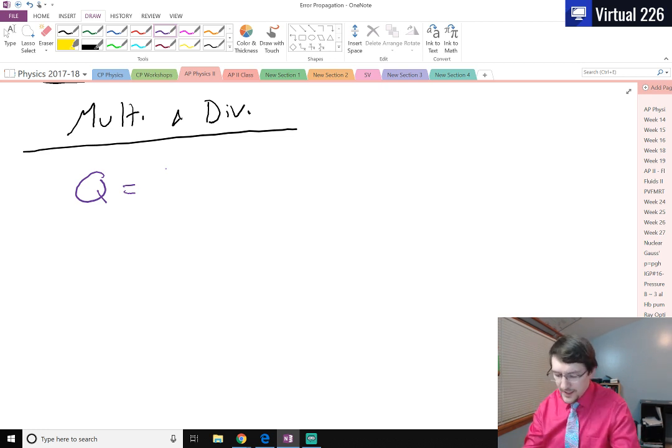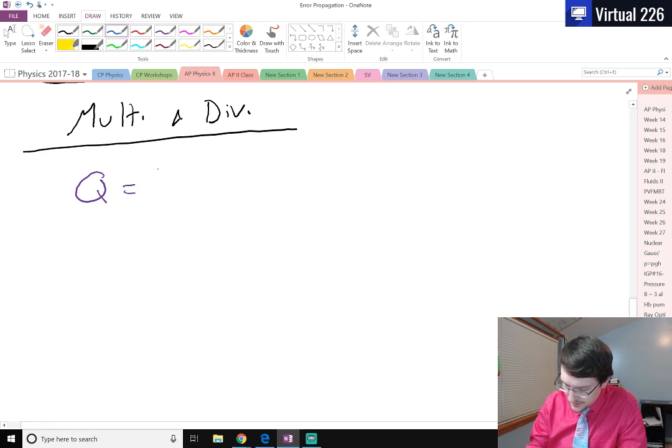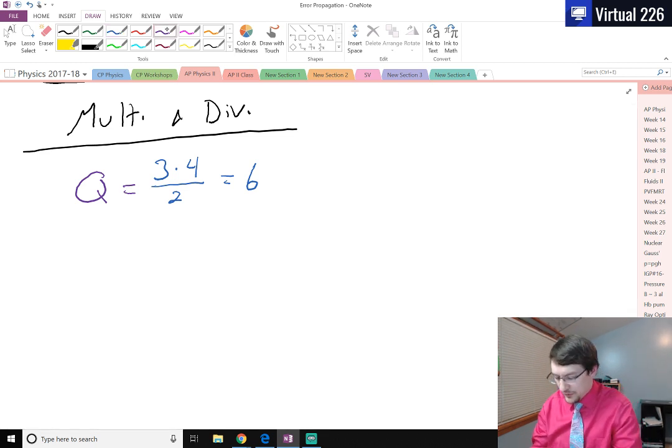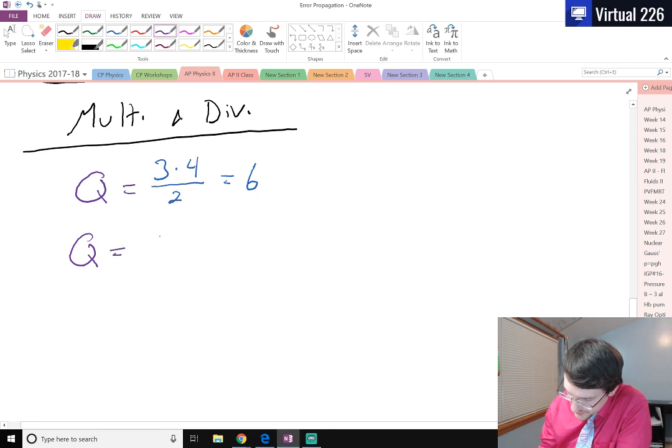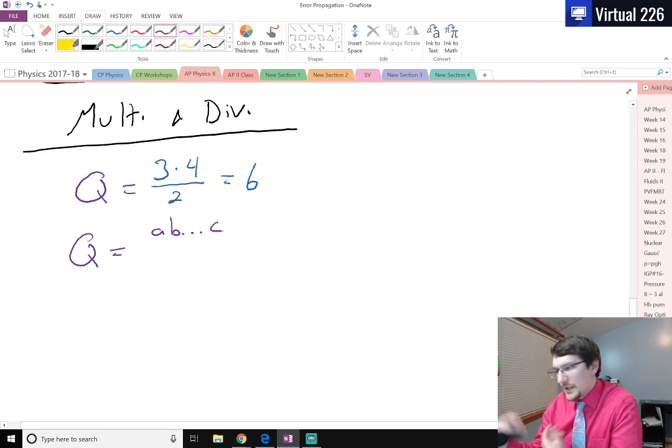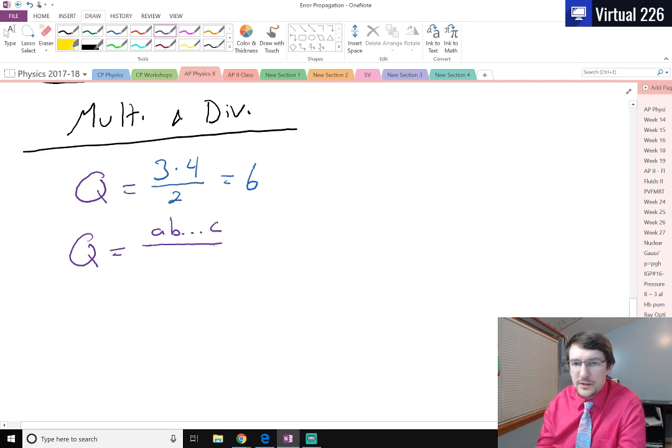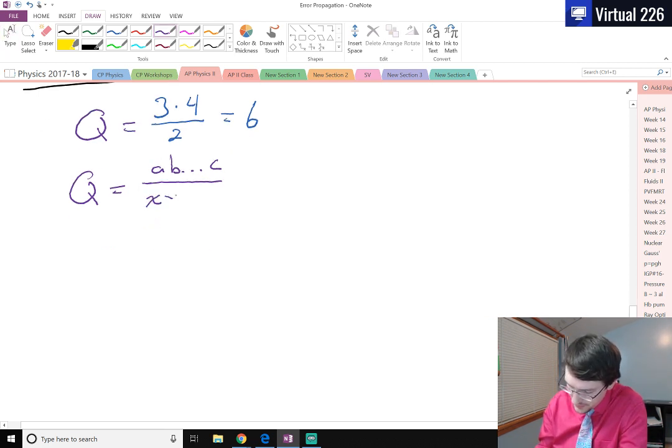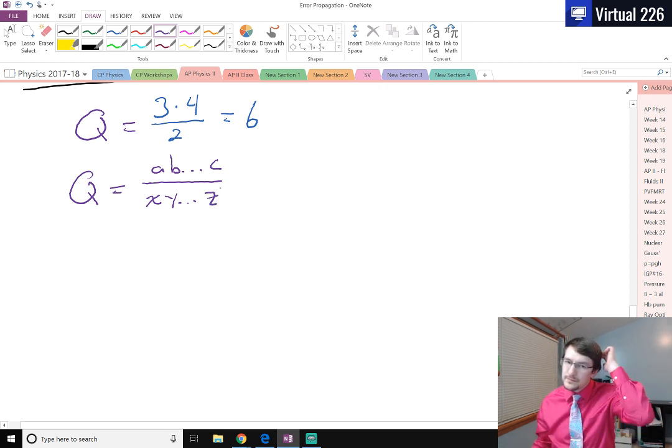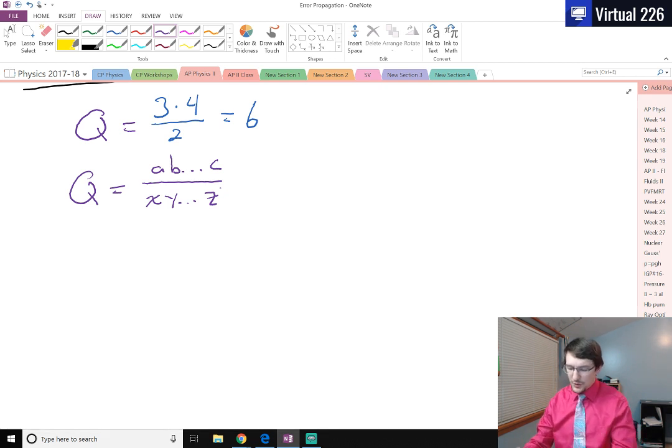So if I had a few measurements, maybe something like three times four divided by two, well your Q value would just be twelve divided by two, which is six. We could always do that. So in general we could write Q as just being some numbers multiplied together, A B C D E F G, however many numbers you have, divided by however many numbers you need to divide by, X Y and Z. We're just multiplying and dividing things together. That gives us the measured value of Q.